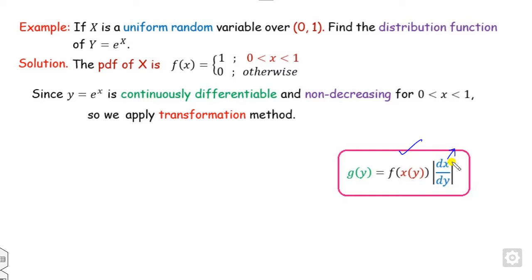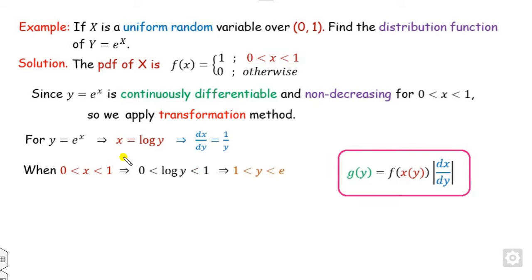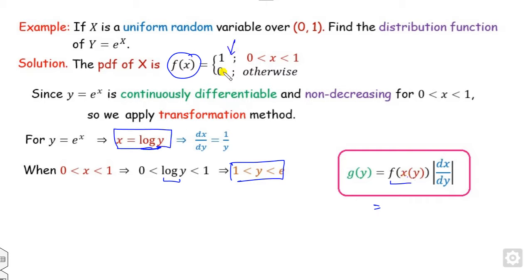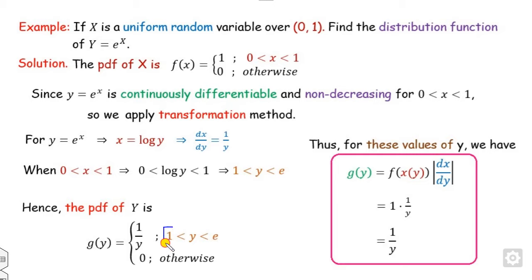To apply the method, we need dx/dy. Calculate x from y: since Y = e^X, we get x = log y, so dx/dy = 1/y. Since x lies between 0 and 1, y lies between 1 and e — this is the limit of Y. Substituting: f(x) = 1 (a constant), and |dx/dy| = 1/y (positive throughout, so no need for the absolute value). Hence the pdf of Y is 1/y for y in [1, e], and 0 otherwise.